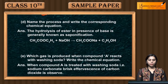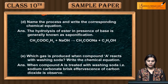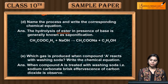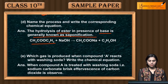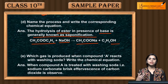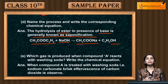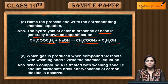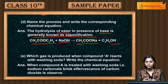Name the process and write the corresponding chemical equation. Hydrolysis of ester in the presence of a base is generally known as saponification. This is your ester — if you add base, then you get carboxylic acid sodium salt plus ethanol. You get acid again, but in salt form. This process is also used for soap formation on a large scale.